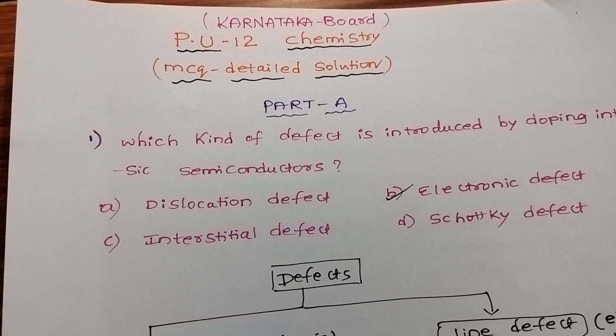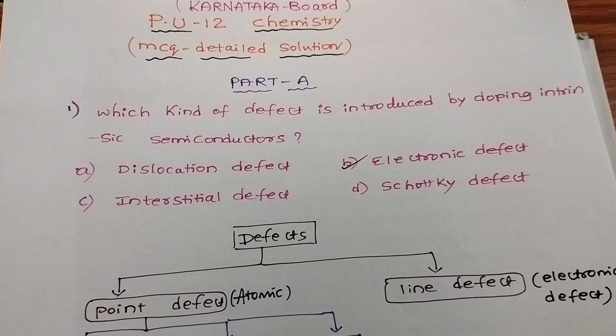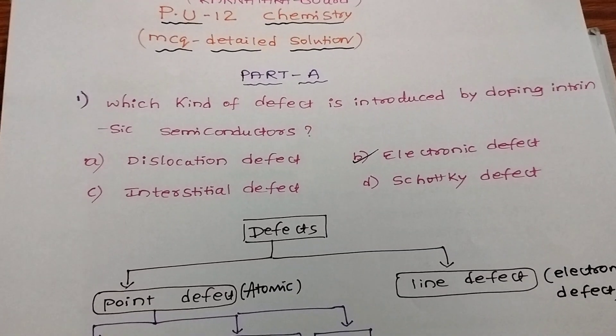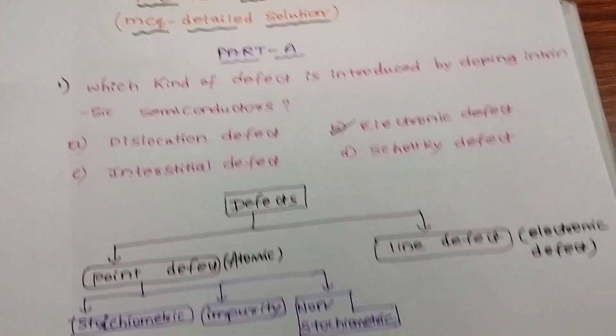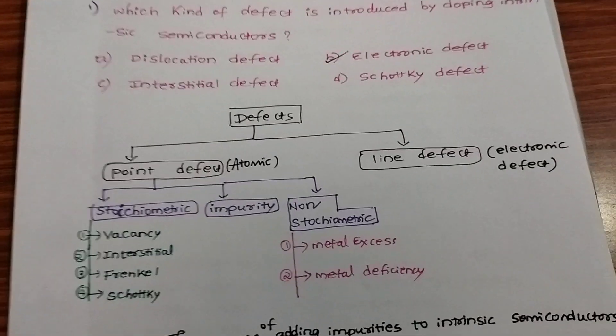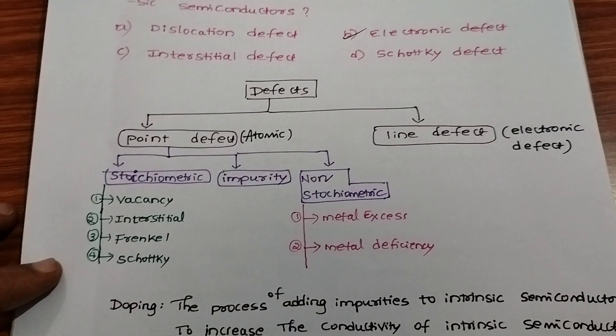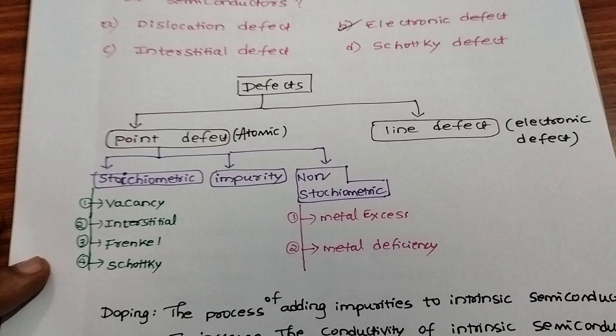First question: which kind of defects is introduced in doping intrinsic semiconductors? Four options are given. The answer is electronic defect. I will explain the different types of defects, focusing on the main part.